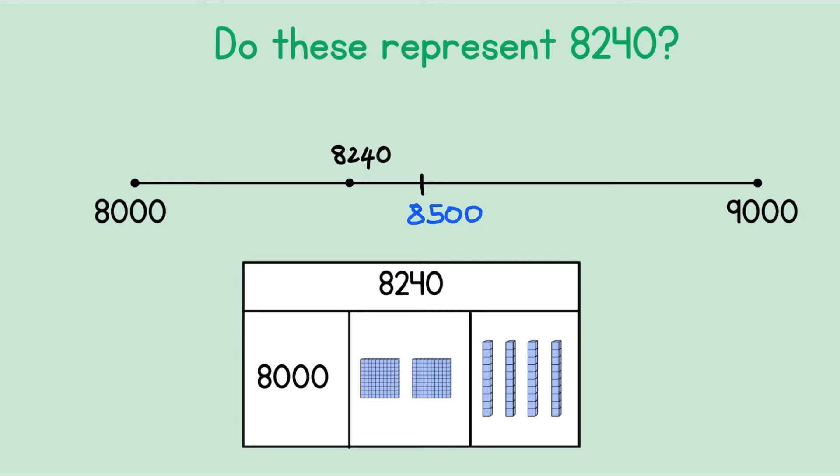What's our number? Our number is 8,240. So this is not the correct representation because it is too close to 8,500. 8,200 would have been somewhere over here. So this one is not correct.